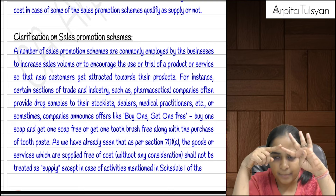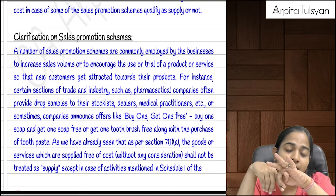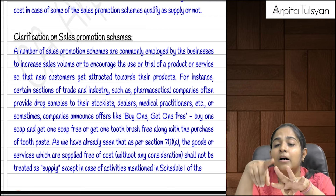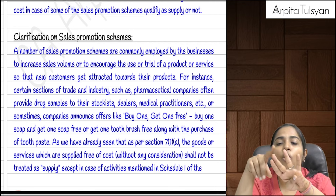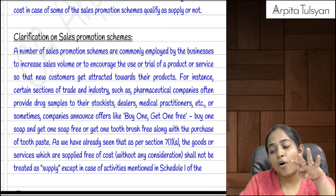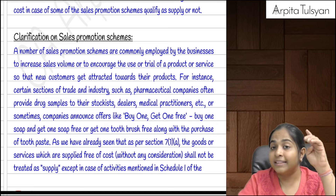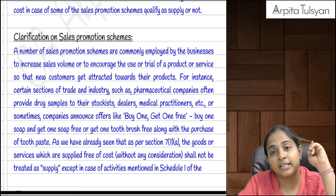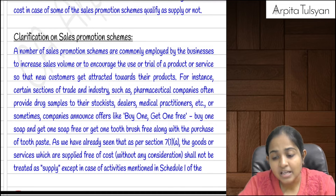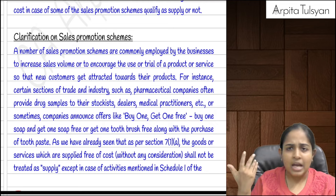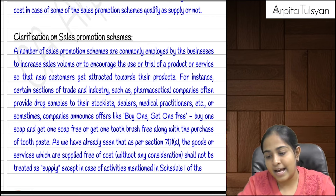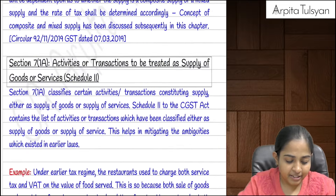Summary of Schedule 1 — deemed supply, four pointers, all without consideration: (1) permanent transfer or disposal of business assets on which ITC has been claimed; (2) supply of goods or services between related persons, distinct persons, or establishment of distinct persons in the course of business; (3) supply of goods by principal to agent or agent to principal (agent selling on his own account); (4) importation of services for no consideration from related persons or distinct persons, in the course of business.